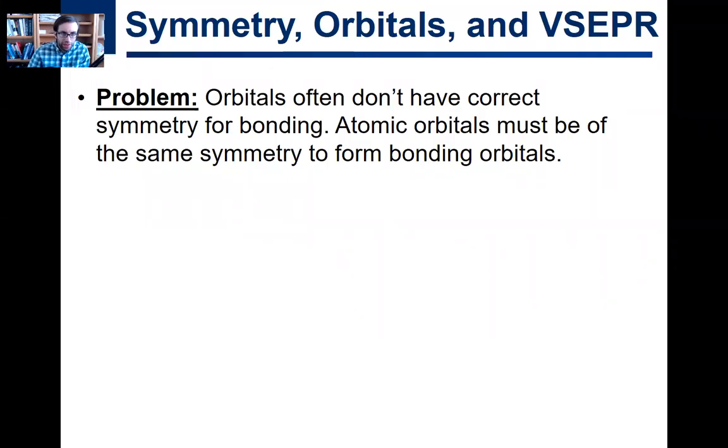So I want to start this video with a problem, and the problem is that orbitals often don't have the correct symmetry for bonding. In order to make a bond, atomic orbitals must be of the same symmetry in order to form bonding and then anti-bonding orbitals.